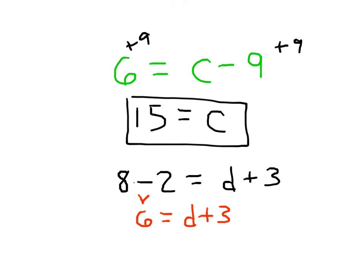Again, I want to isolate the variable, meaning I want to have the variable alone on one side. To get rid of the plus 3, I go ahead and subtract 3 from both sides of that equation. 6 minus 3 leaves us with 3. D plus 3 minus 3 just leaves us with D. D equals 3.